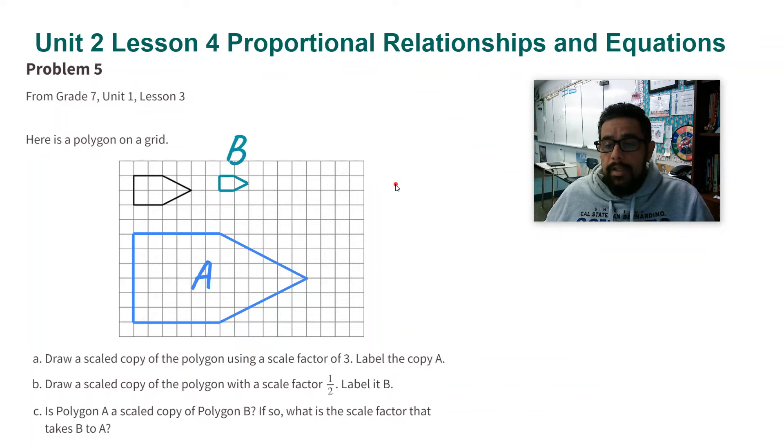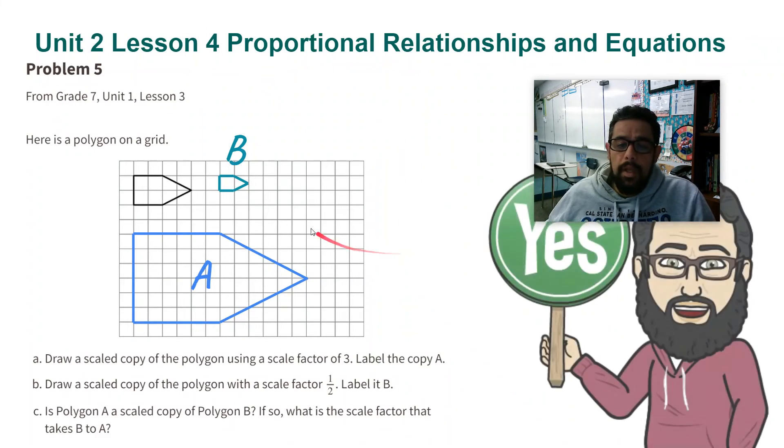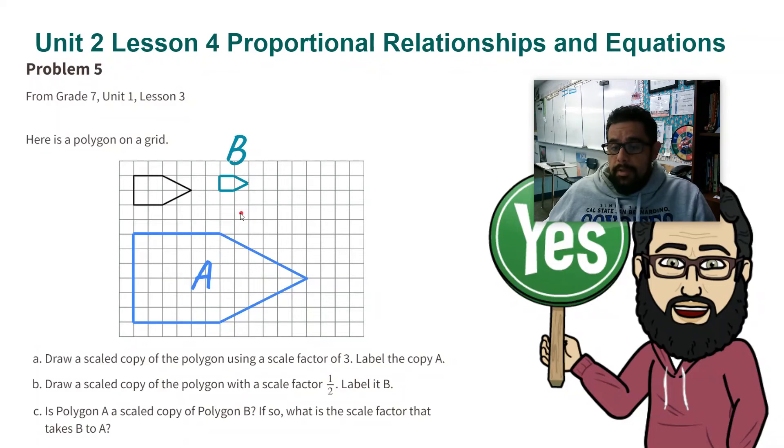Part C: Is Polygon A a scaled copy of Polygon B? If so, what is the scale factor that takes B to A? Here's something we touched upon in Unit 1: if something is a scaled copy of something, and then there's another scale copy, those are all scaled copies of each other. So yes, B and A are scaled copies of each other.